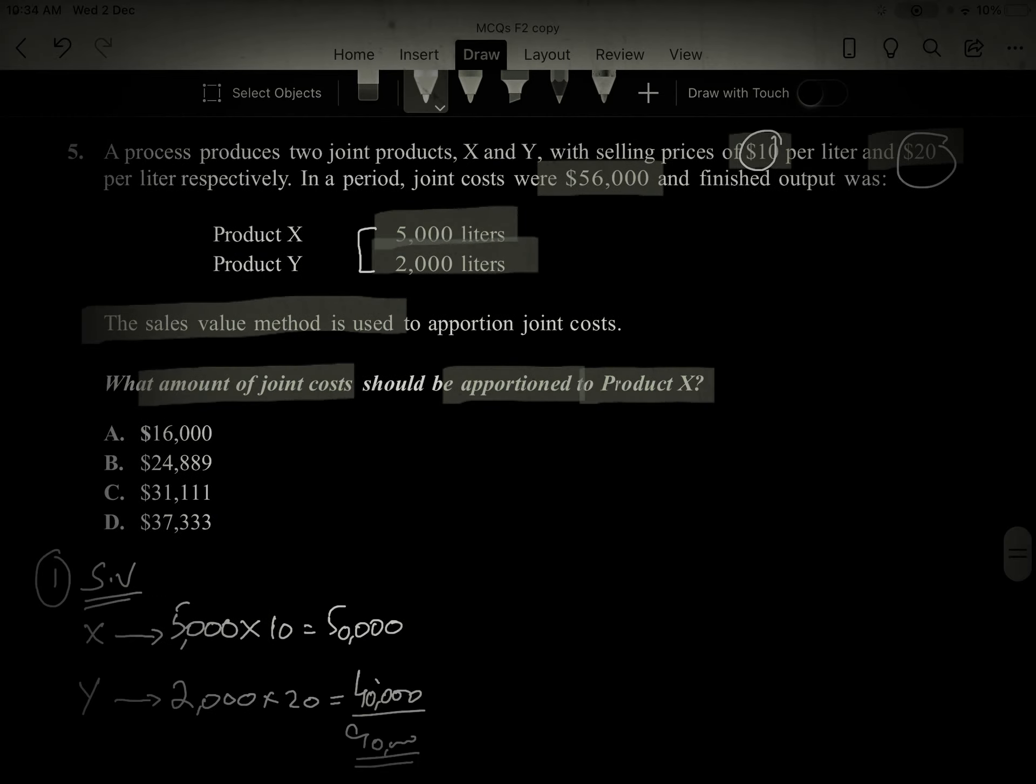Now we distribute. We distribute the joint cost, that is $56,000.